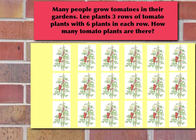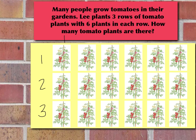Let's look at a problem. Many people grow tomatoes in their gardens. Lee plants three rows of tomato plants with six plants in each row. How many plants are there? The first thing we need to do is look at what kind of picture we can draw. Rows go left to right, so we're going to look at the number of plants in each row. He has three rows — one, two, three rows of tomatoes — and then six plants in each row: one, two, three, four, five, six plants in each row.